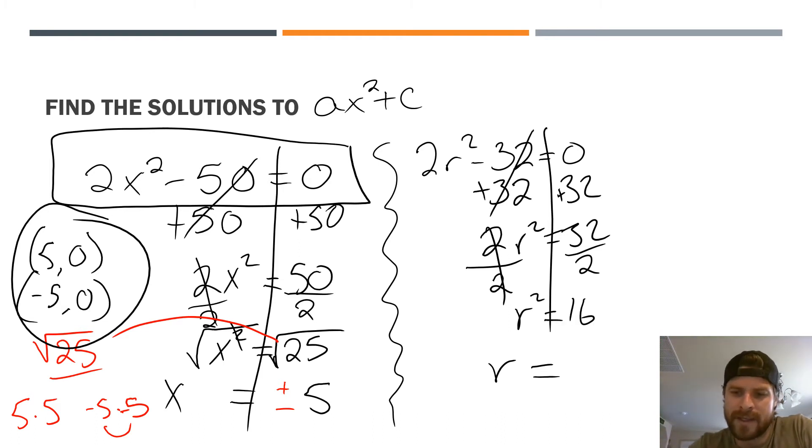Opposite of squaring something is square rooting it. That gets rid of that exponent of 2. Square root the right side. Square root of 16 is 4, but it can be both positive and negative. Remember we just talked about that on the previous problem. So you're going to get the positive and the negative result.